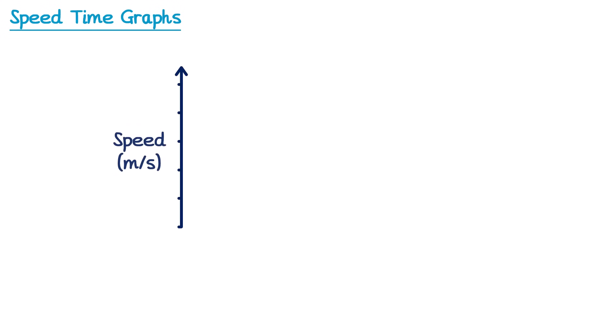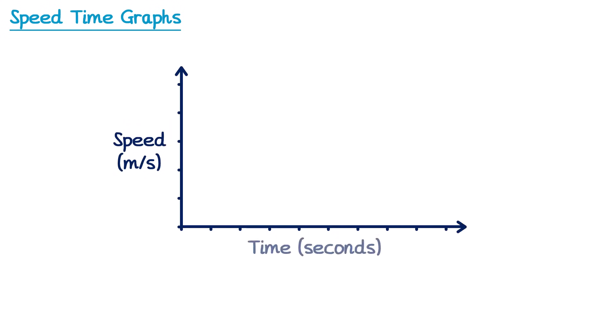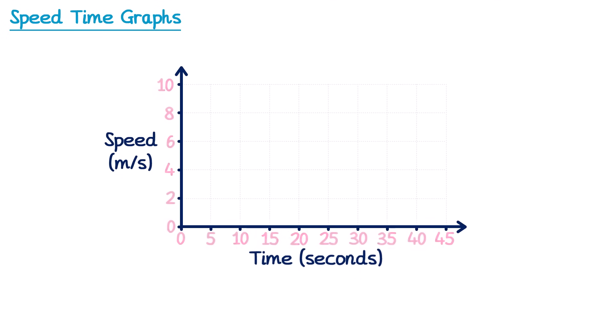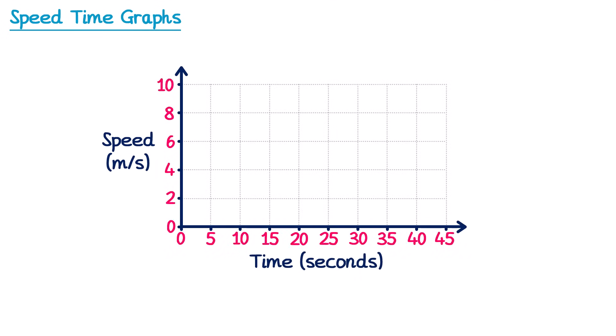If we draw a graph with speed on the vertical axis and time on the horizontal axis, then we call this a speed-time graph. Let's add some scales to these axes and look at a speed-time graph for a runner during a race. During the race we have a speed-time graph that looks something like this.